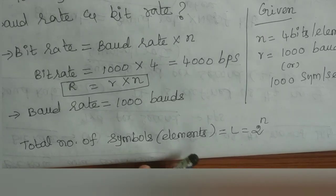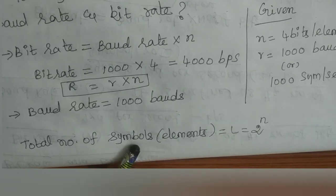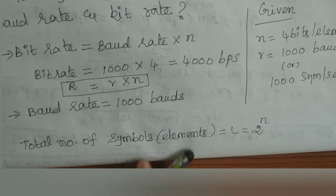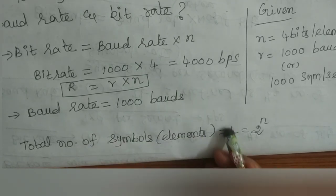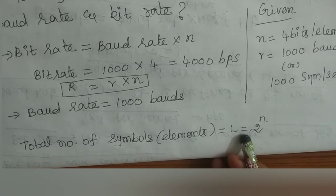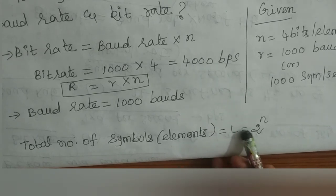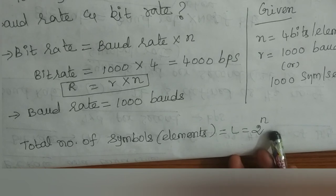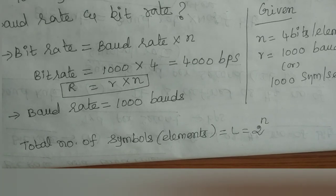We can also calculate the total number of symbols, elements, or bit length — all refer to the same thing. Some books use the term 'element', others use 'symbol' or 'bit length'. Bit length L equals 2 power n, so L equals 2 power 4, which is 16. The total bit length is 16.